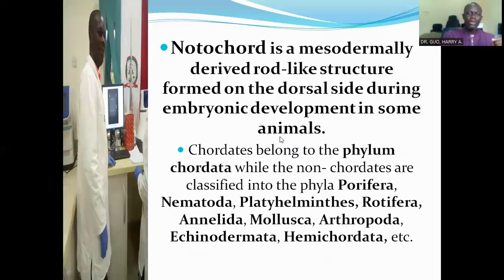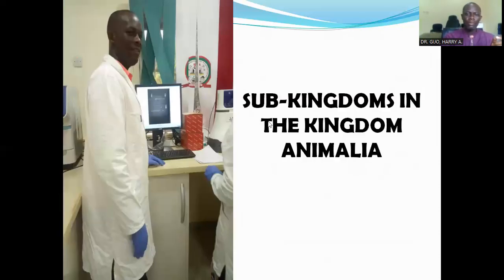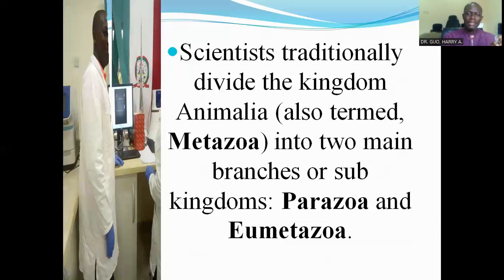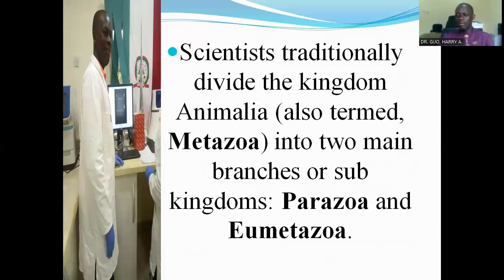I want to look at another feature — the sub-kingdoms in the Kingdom Animalia. We have two sub-kingdoms in the kingdom Animalia. Scientists traditionally divide the kingdom Animalia, also termed Metazoa, into two main branches or sub-kingdoms: the sub-kingdom Parazoa and the sub-kingdom Eumetazoa.